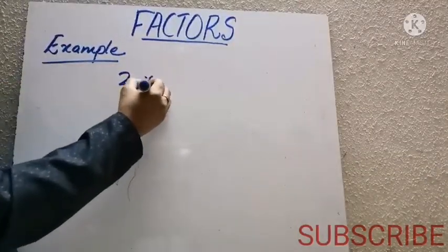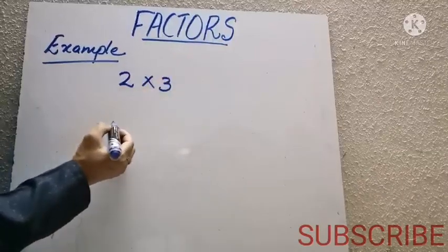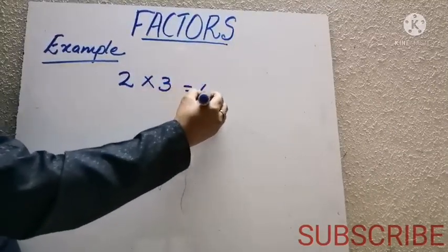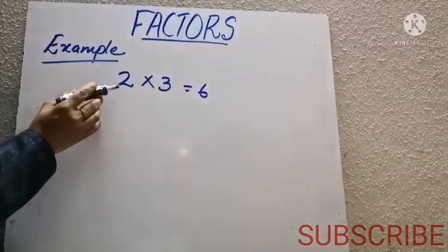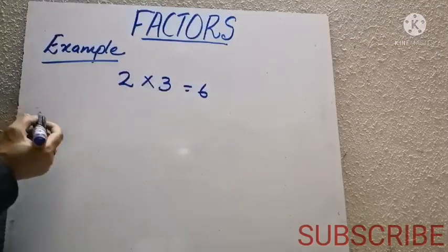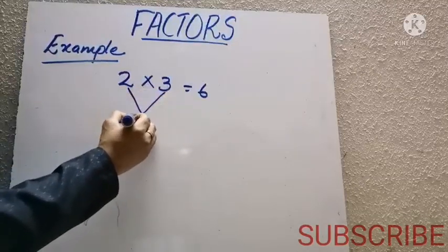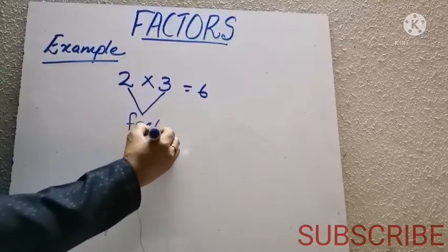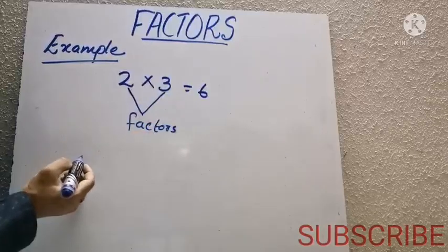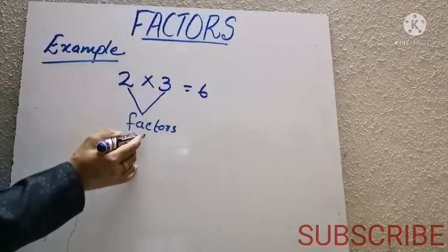What is 2 multiplied by 3? Which is equal to 6. Here when you multiply 2 and 3 you got the answer 6, so 2 and 3 are the factors of 6.